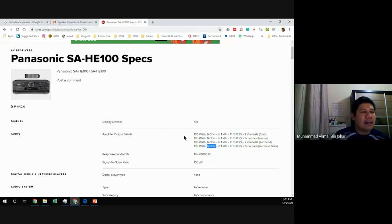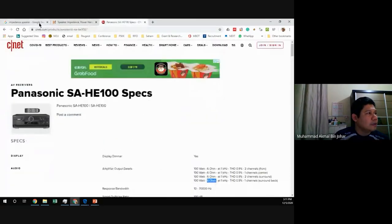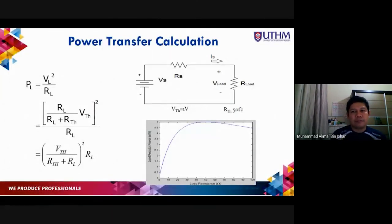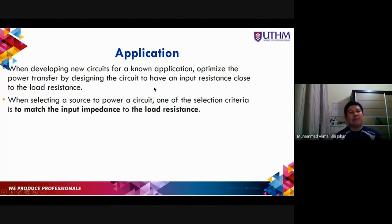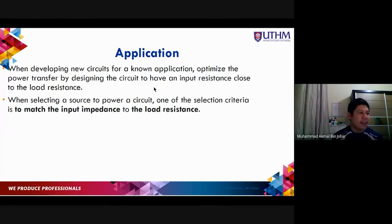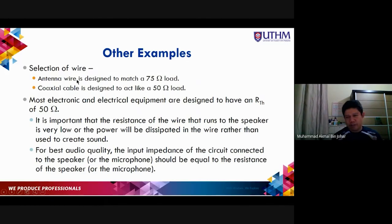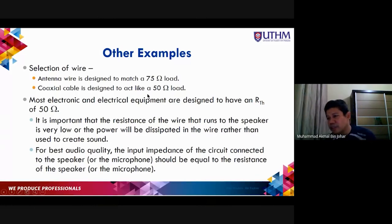When developing a new circuit for a known application, we optimize power transfer by designing the circuit to have an input resistance close to the load resistance. Engineers must keep in mind what impedance value is required. One selection criterion when powering a circuit is to match the input impedance to the load resistance. For example, antenna wires are designed to match 75 ohms, while coaxial cables are designed for 50 ohms.